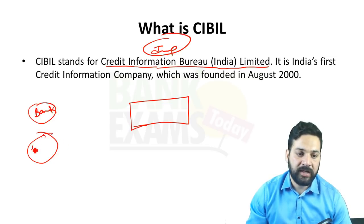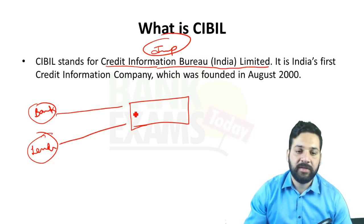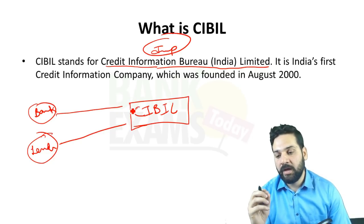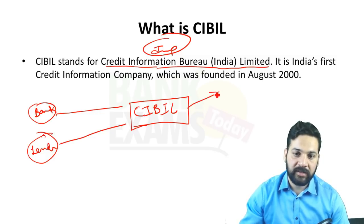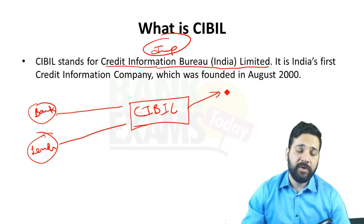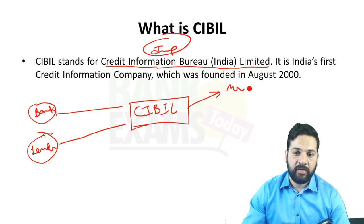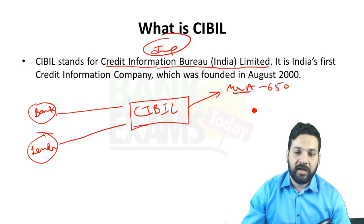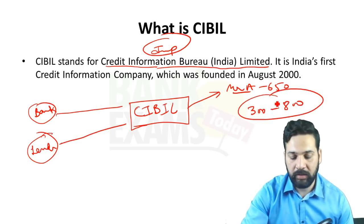At the end of every month, banks submit a monthly report to CIBIL's database. Based upon these reports, CIBIL gives credit scores to all individuals in the country, based upon their PAN number. The CIBIL score varies from 300 to 800.